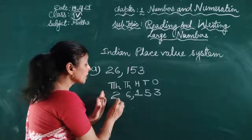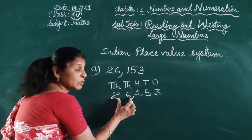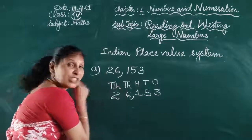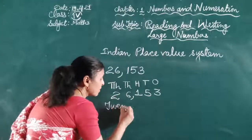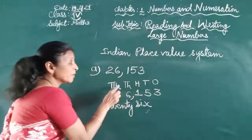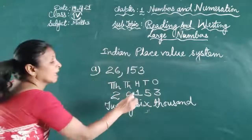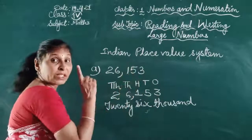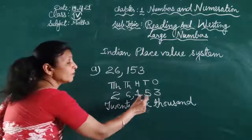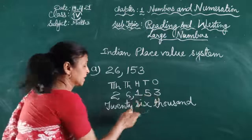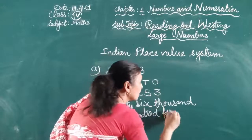We put the comma here to separate the periods. Now, how do we read this number in words? We read the two digits in the thousands period together and write the period name after. So we read twenty-six and since it belongs to the thousands period, we write twenty-six thousand. Then the three digits in the ones period are read together without a period name. That gives us twenty-six thousand one hundred fifty-three.